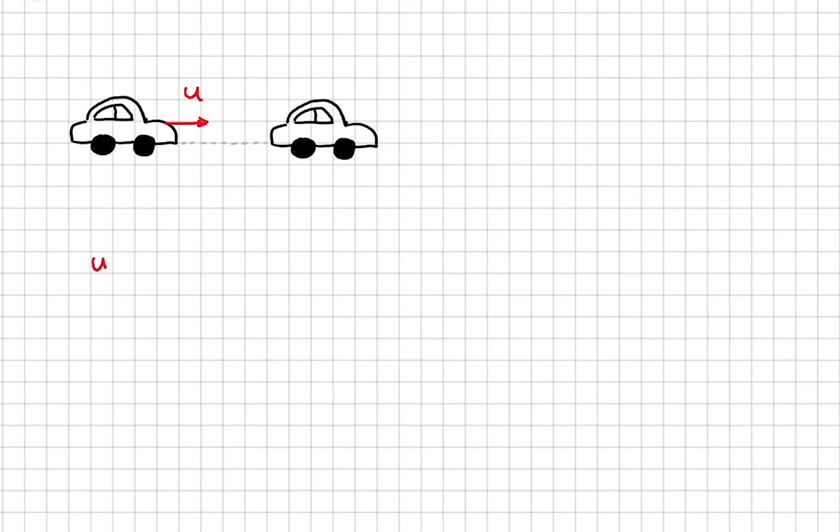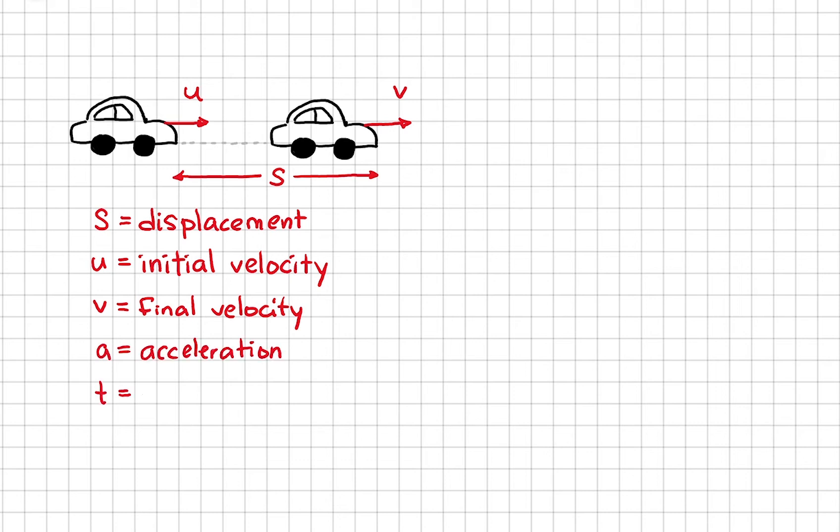Let's define the initial velocity to be u, the final velocity v, and the distance between its starting point and final position is the displacement s. a is the acceleration and t is time.